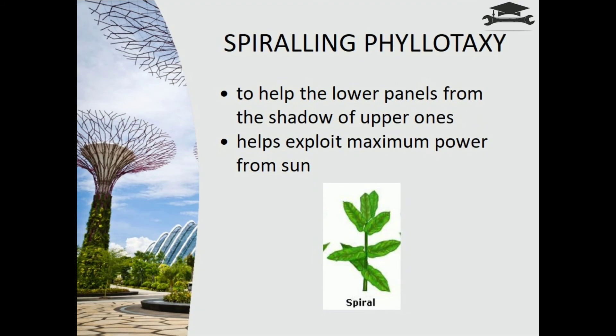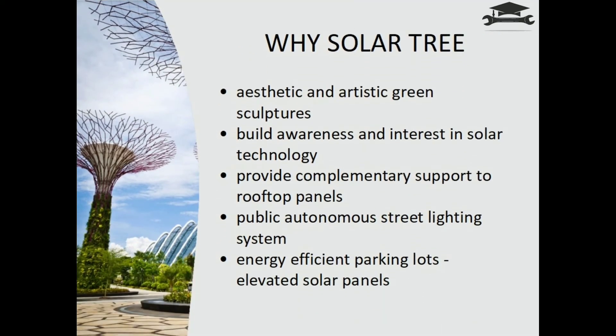When discussing a solar tree, a very important concept is spiraling phyllotaxy. In a botanical context, phyllotaxy is the arrangement of leaves over a stem. Likewise, the arrangement of solar panels in a solar tree must ensure maximum efficiency in harnessing solar energy — that is, one panel should not be covered by the shade of the upper panels. The design principle used to ensure this is spiral phyllotaxy.